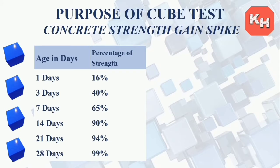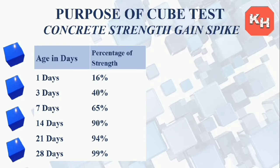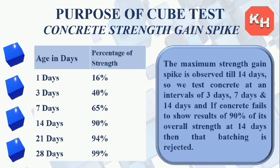In the table, age in days versus percentage strength: at 1 day it achieves 16%, at 3 days 40%, at 7 days 65%, at 14 days 90%, at 21 days 94%, and at 28 days 99% strength. Maximum strength gain is observed till 14 days, so we test concrete at intervals of 3, 7, and 14 days. If concrete fails to reach 90% of its overall strength at 14 days, that batching is rejected.